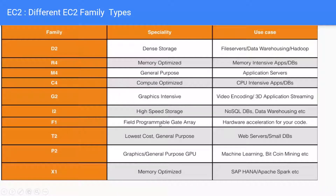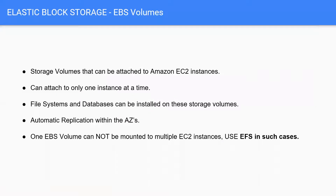In F series, it uses hardware acceleration of your code, providing field programmable gate arrays for your applications. P2 and P3 instances are basically for GPUs. When you have applications like machine learning, very high compute intensive applications, bitcoin mining, etc., you will go for these kind of instances. X1 and similar are memory optimized families where use cases include SAP HANA, Apache Spark, distributed programming systems.